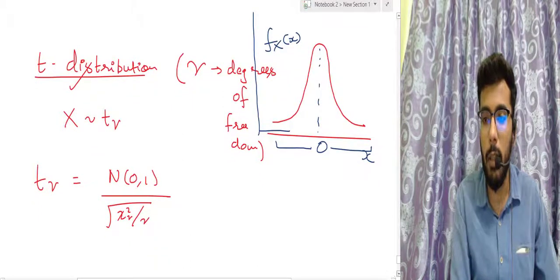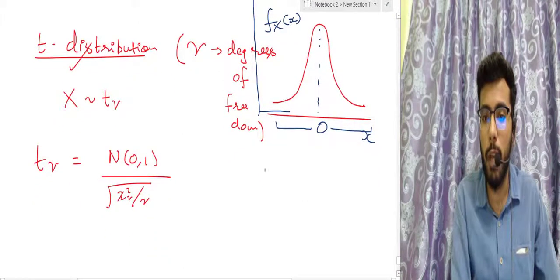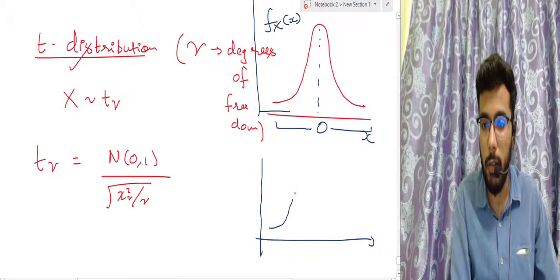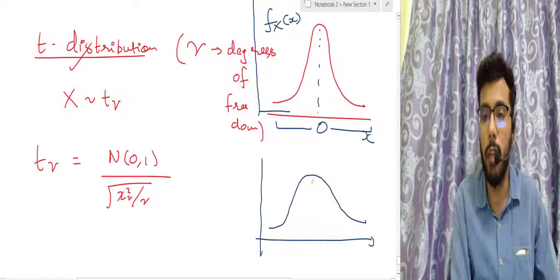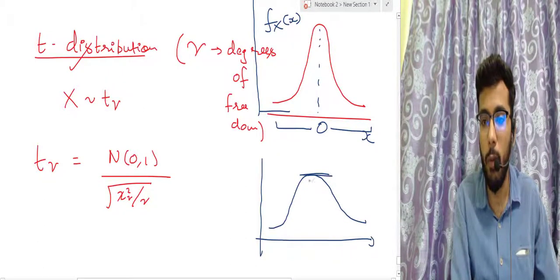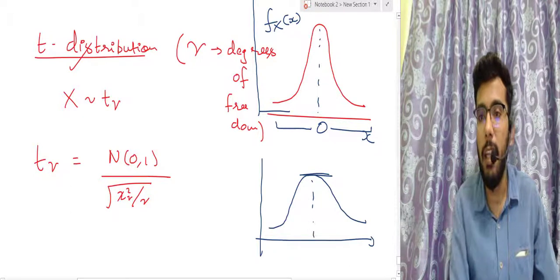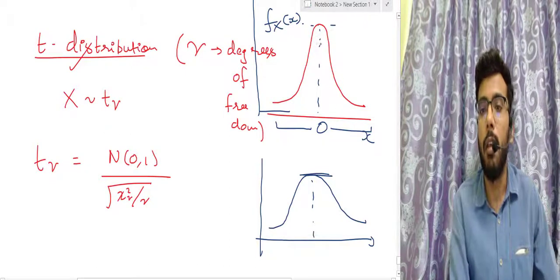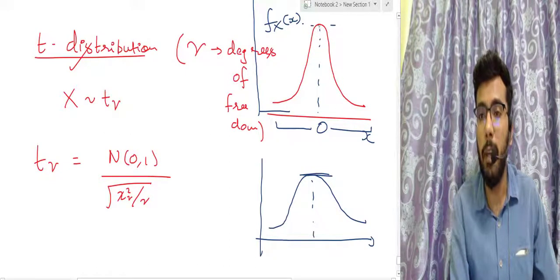The difference between the T distribution and the normal distribution is that the normal distribution is more flat at the top, while the T distribution is more peaked at the top. That's the difference — the T distribution has a higher kurtosis.